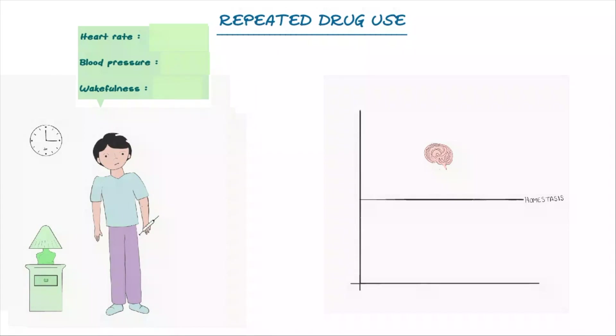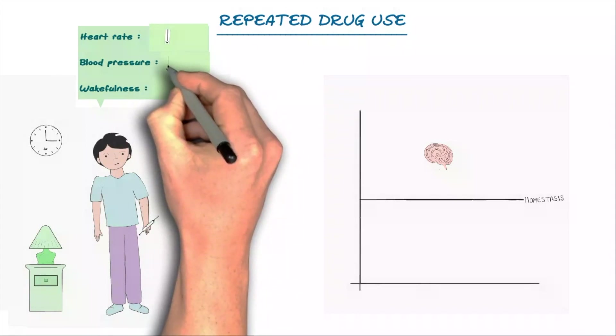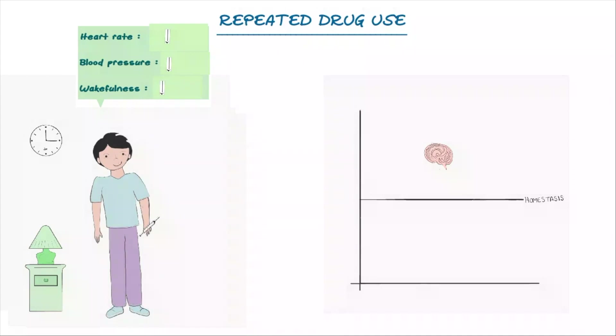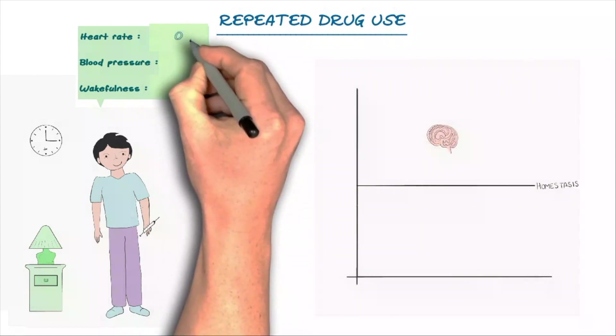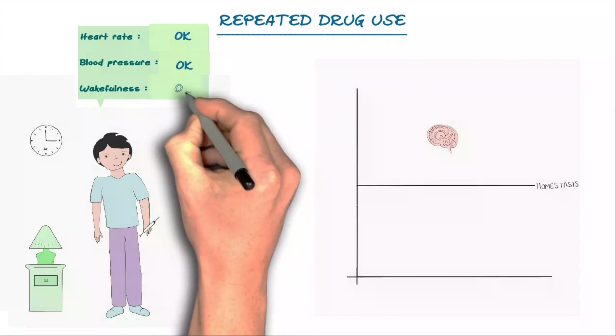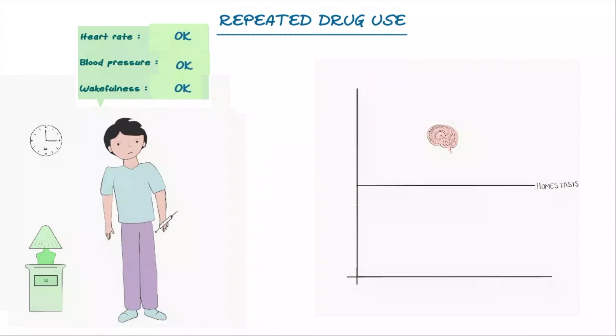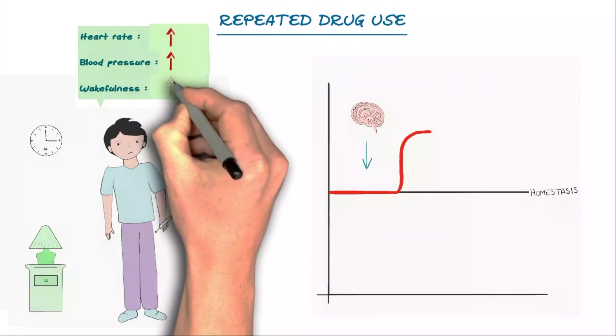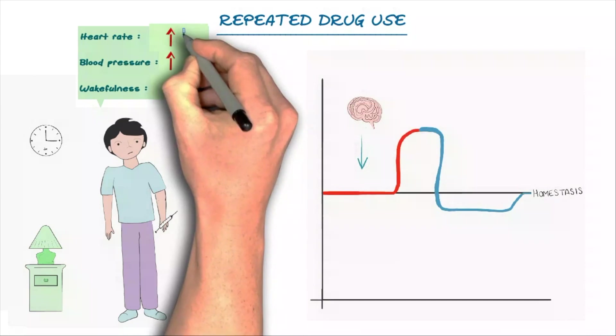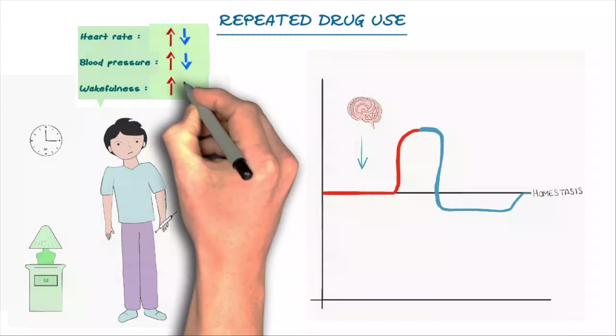With repeated drug use, a few things start to happen. Let's say you take the drug at a specific time and setting, like 3pm in the bedroom. And being a depressant, it makes everything go lower. Heart rate, blood pressure, and wakefulness. Your brain being the smart brain that it is will pick up on the pattern. Now next time, at 3pm in the bedroom, the brain preemptively increases each one, since it knows that when you take the drug, everything is going to decrease again.